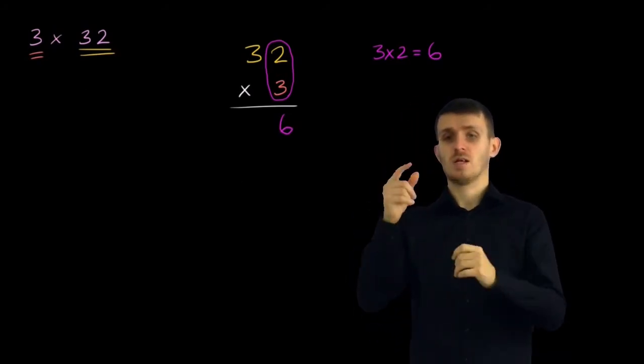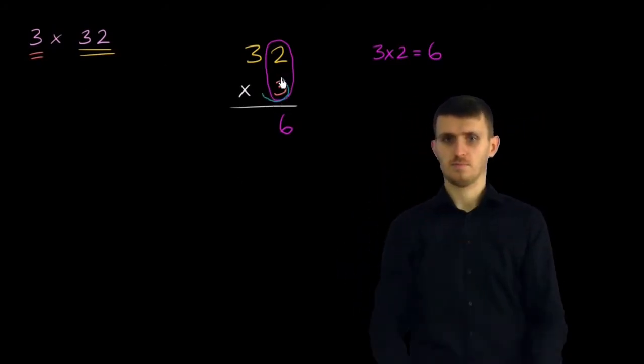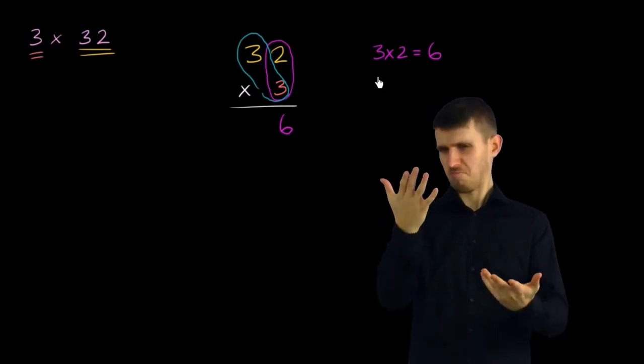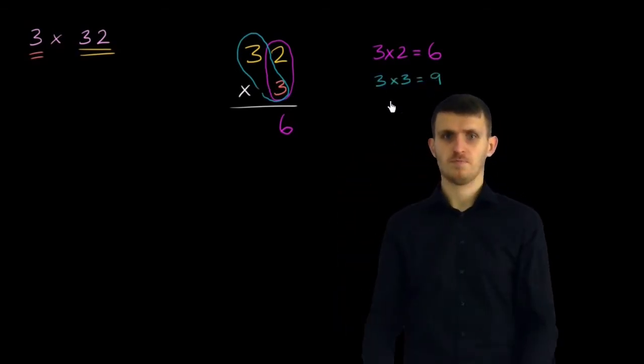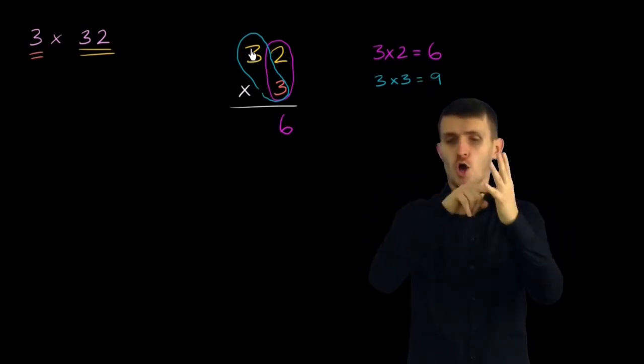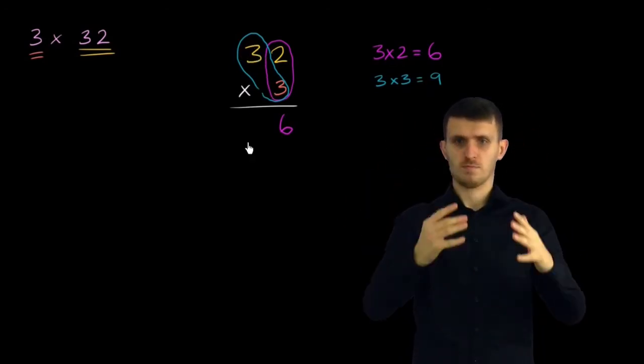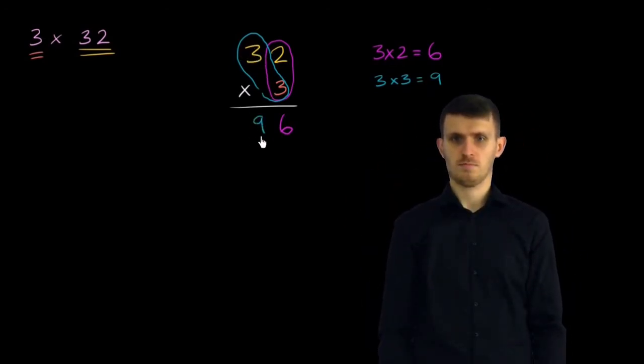Now we're going to figure out what 3 times 3 is. Well, we know that 3 times 3 is 9. And since I'm multiplying times the tens place right over here, I'm going to put it in the tens place right like this.